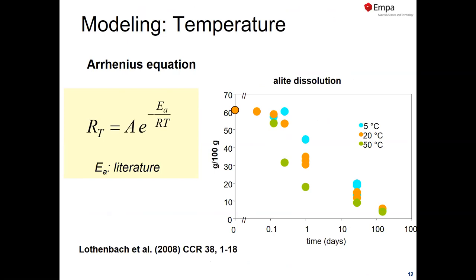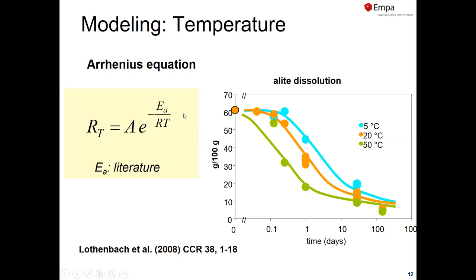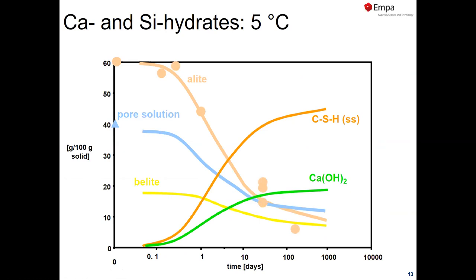There is also in the Excel sheet a temperature dependence. Basically we just use the Arrhenius equation, which says the rate of any chemical reaction depends on temperature: if temperature goes up the reaction is faster, if temperature goes down the reaction is slower. There is a so-called activation energy in it, which depends on the chemical element we look at, and this describes how much faster or slower the reaction will be.